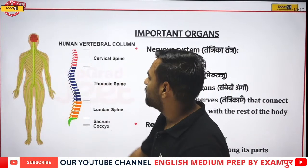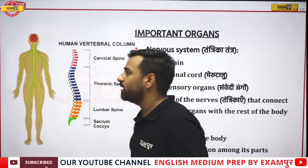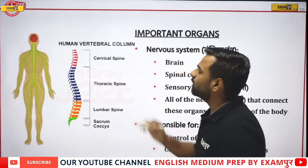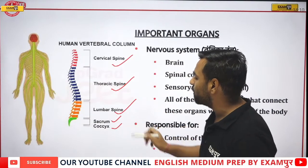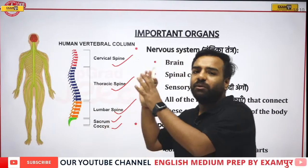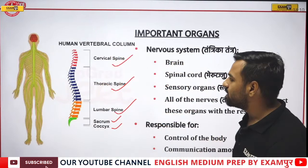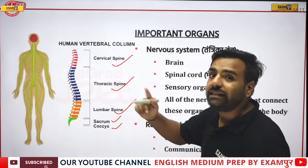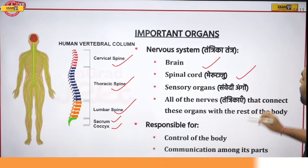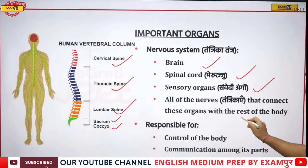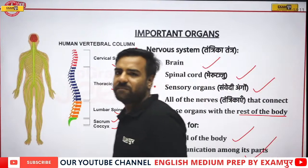Looking at the important organs: the human vertebral column runs along the dorsal or back side of our body. In the starting part we have the cervical spine, then the thoracic spine, then the lumbar spine, then the sacrum and coccyx bone. The important nervous system organs are the brain, spinal cord, sensory organs, and all the nerves connecting these organs with the rest of the body. They are responsible for control of the body and communication among its parts.